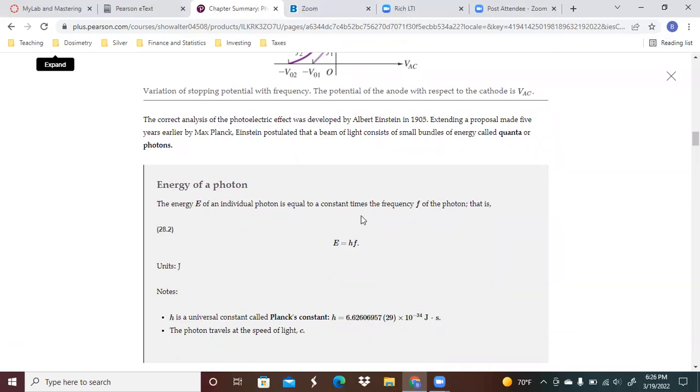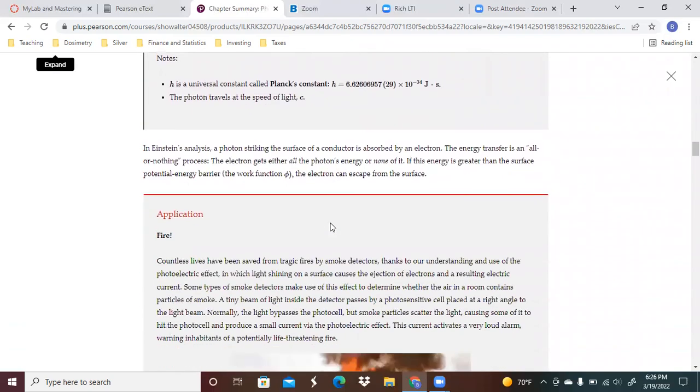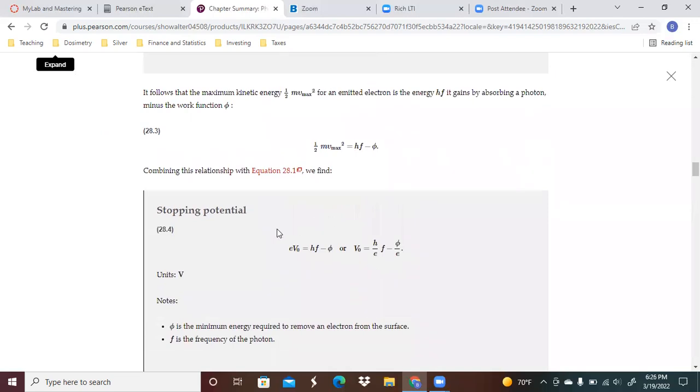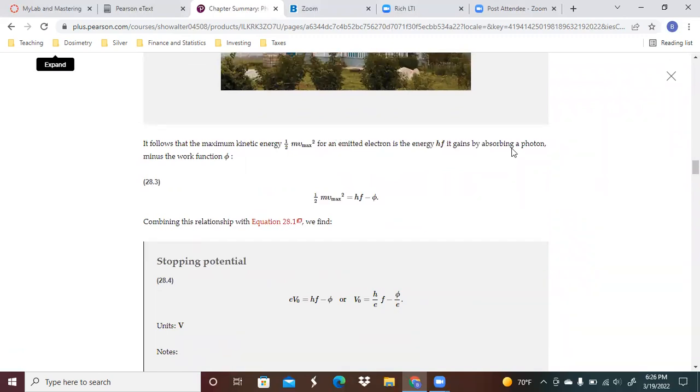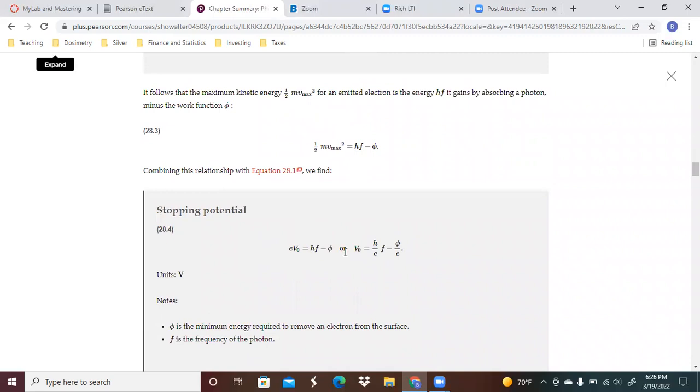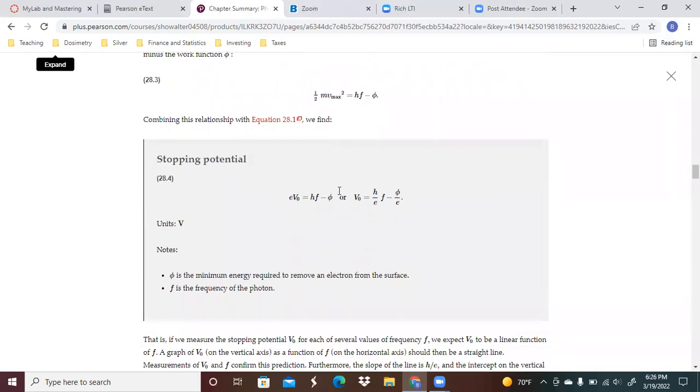The energy of an individual photon is equal to a constant times the frequency of the photon, and that's called Planck's constant. The stopping potential, again, if we're looking at the maximum, it follows that the maximum kinetic energy from the emitted electron is the energy gained from absorbing the photon minus the work function. In other words, the maximum is going to be whatever energy you're getting minus whatever you have to pay in order to break the bond. This is going to be equal to some sort of potential energy given by the voltage, and then you can go through and find out what that voltage is.